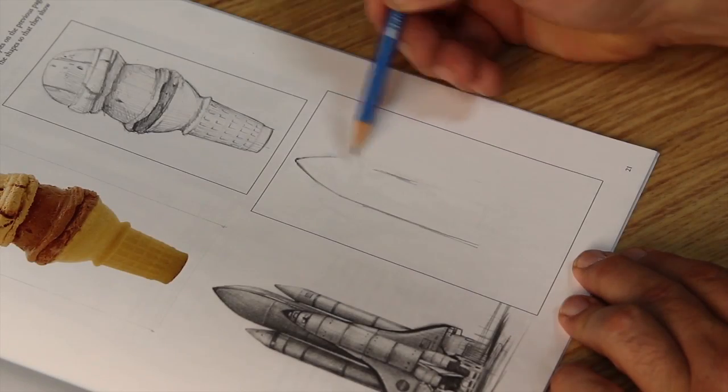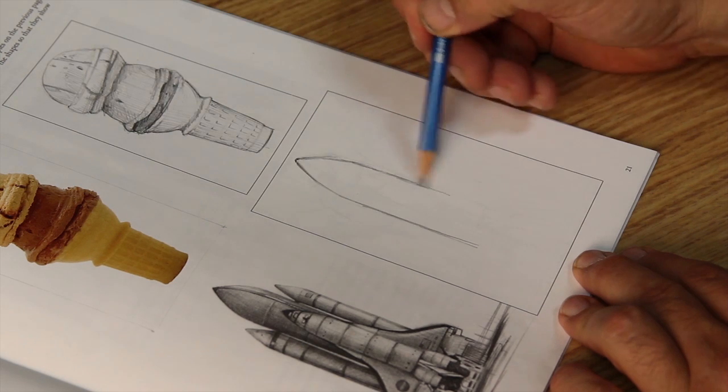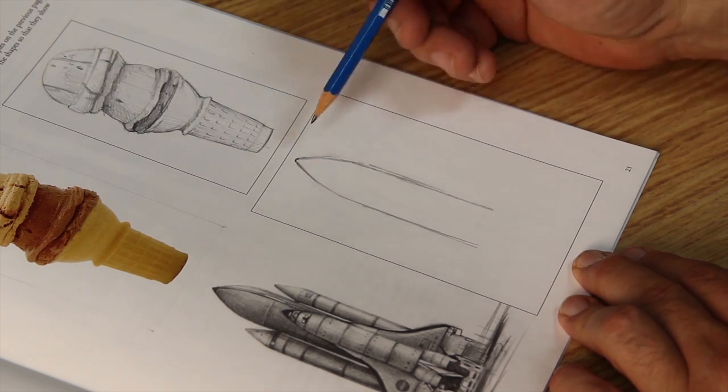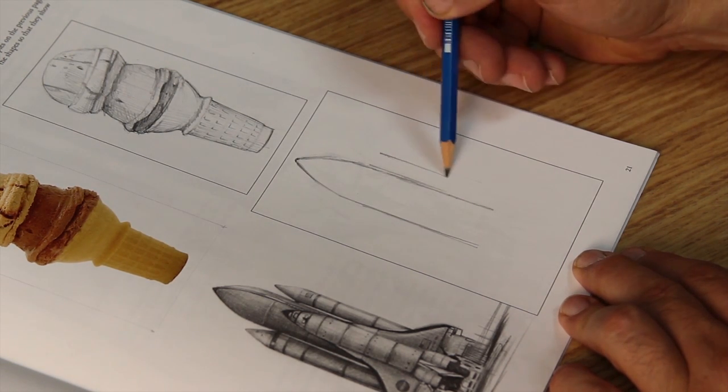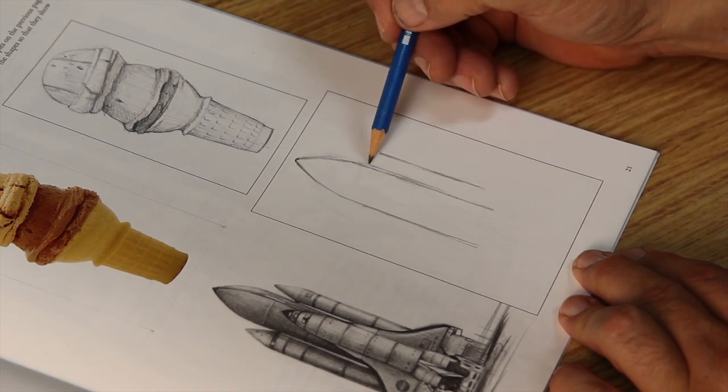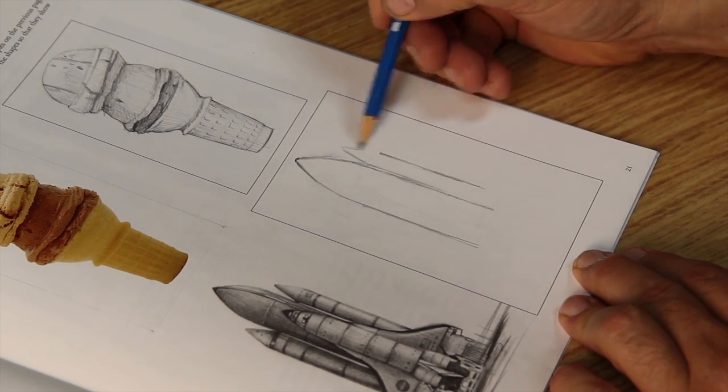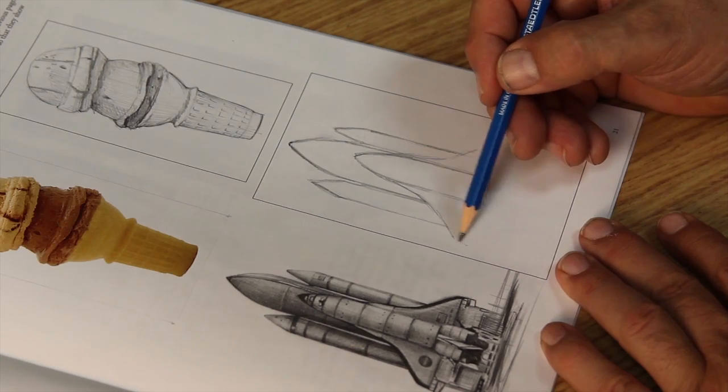In this rocket ship drawing, it's the same thing. It's just basically referencing the source right next to it and copying what you see. And of course, you can't do that unless you reference the drawing or the source.